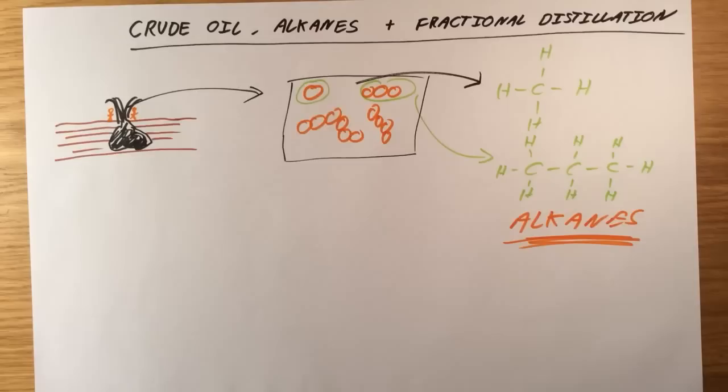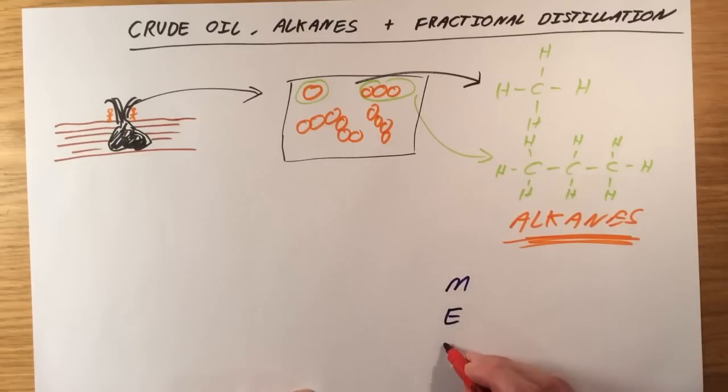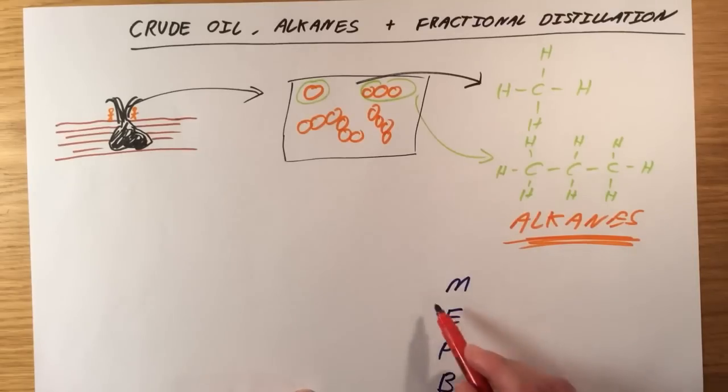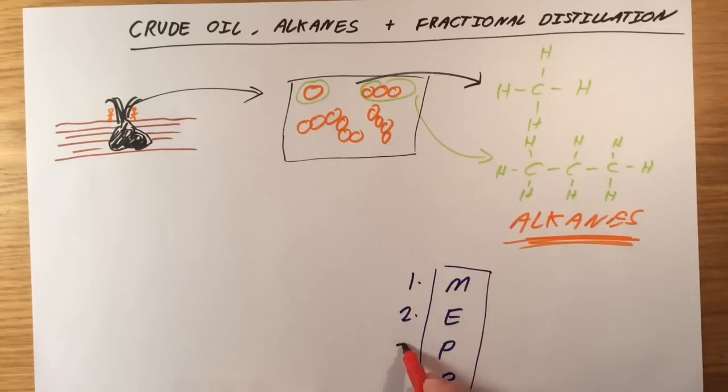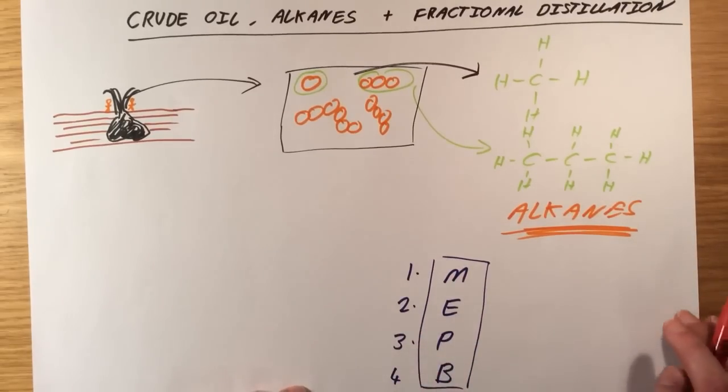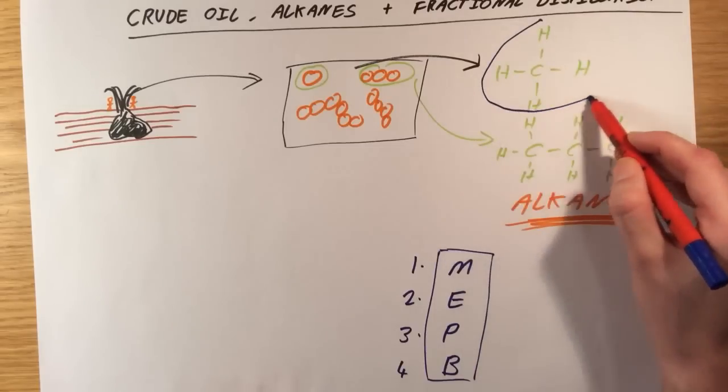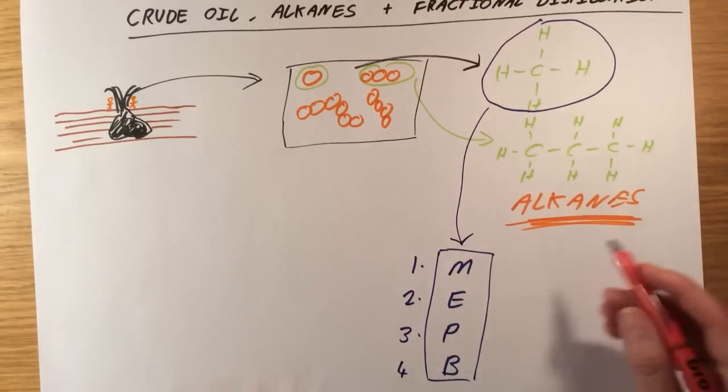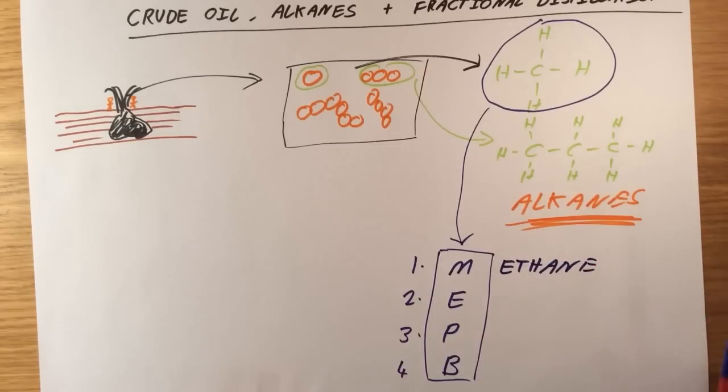So how do I name these alkanes? The way I remember this is a simple mnemonic, which goes monkeys eat purple bananas. This mnemonic corresponds to the number of carbon atoms within my compound. So the first row of monkeys, if I have an alkane containing one carbon atom, which would be this one here, the first letter of that is going to be with an M, and the name of the whole compound is methane.